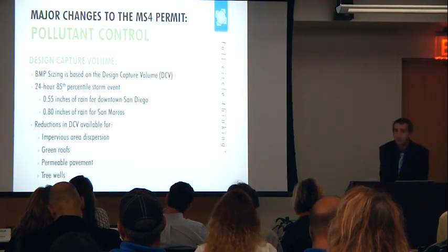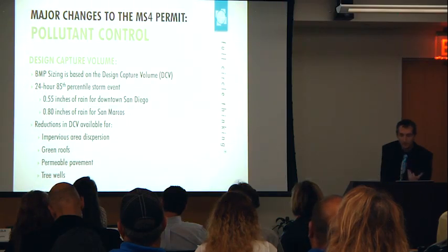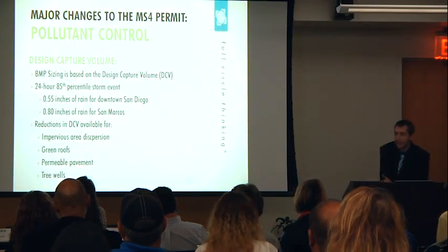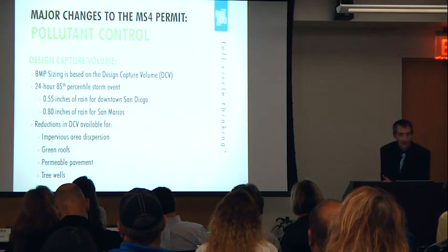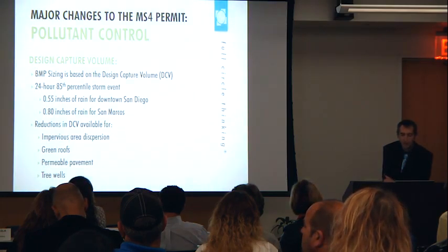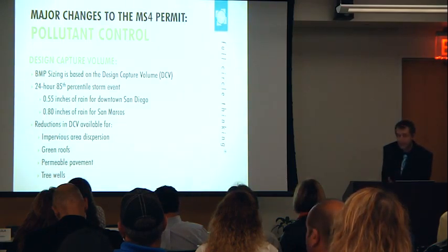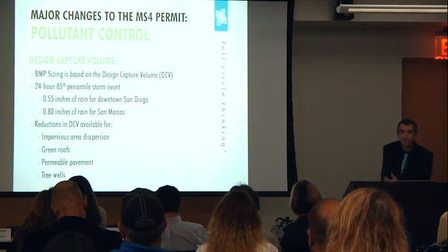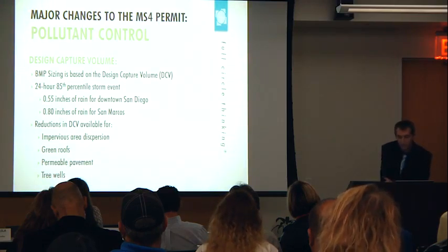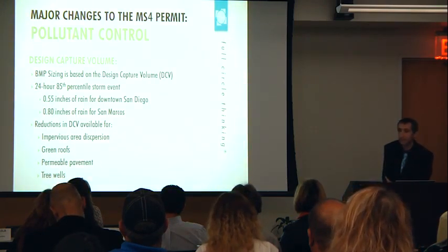Now we'll talk about some of the major changes in the new MS4 permit. They fall into two main categories: water quality, now termed 'pollutant control,' and hydromodification. Under the pollutant control section, there's a new concept called the Design Capture Volume — the storm volume we have to capture and treat. This used to be thought of as the first-flush rainfall event, the small frequent storms that produce the most pollutants. The Design Capture Volume or DCV is sized based on the 24-hour 85th percentile storm event.